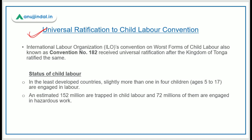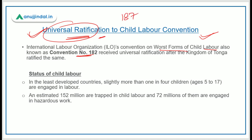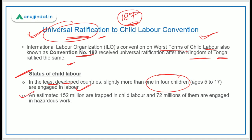Universal ratification has now been achieved by all 187 member states of the ILO. The most recent ratification was by the Kingdom of Tonga in August 2020, after which all member states have ratified it. Regarding the status of child labour globally, in the least developed countries more than 1 in 4 children are engaged in labour. An estimated 152 million are trapped in child labour, and 72 million of them are engaged in hazardous work.